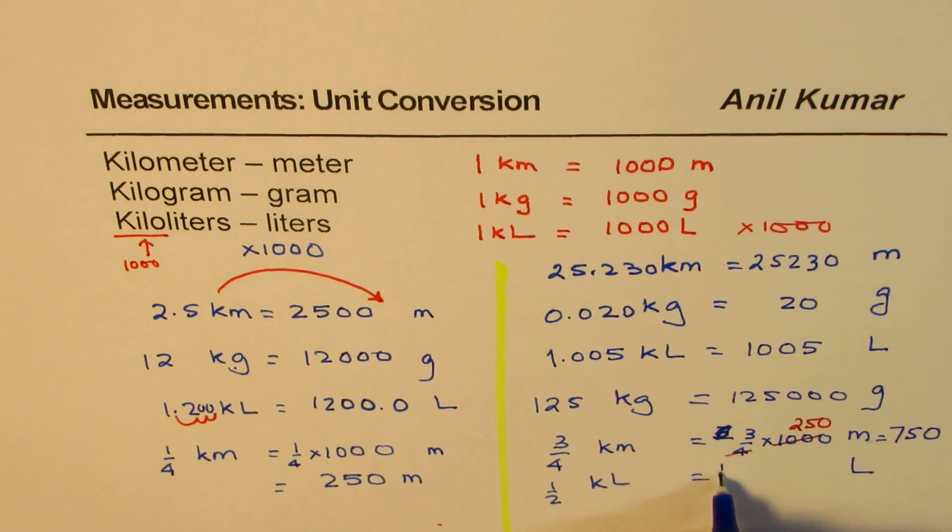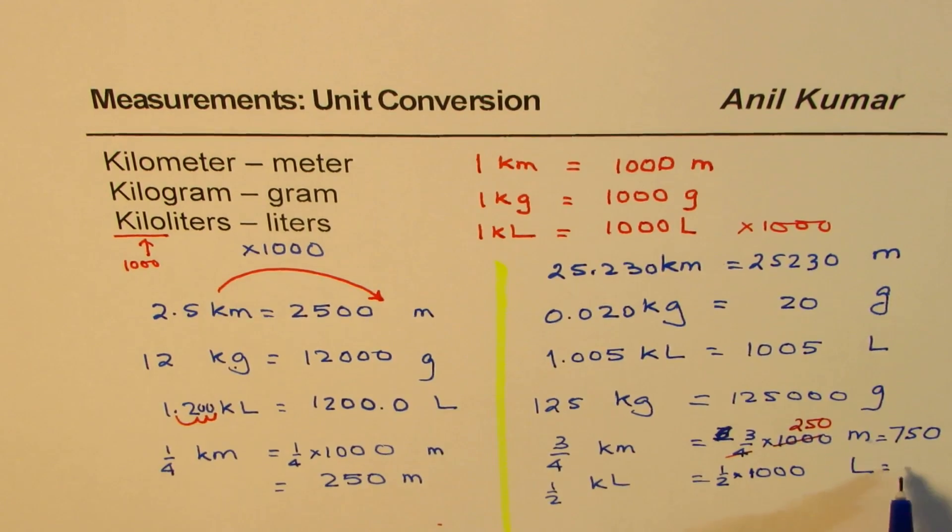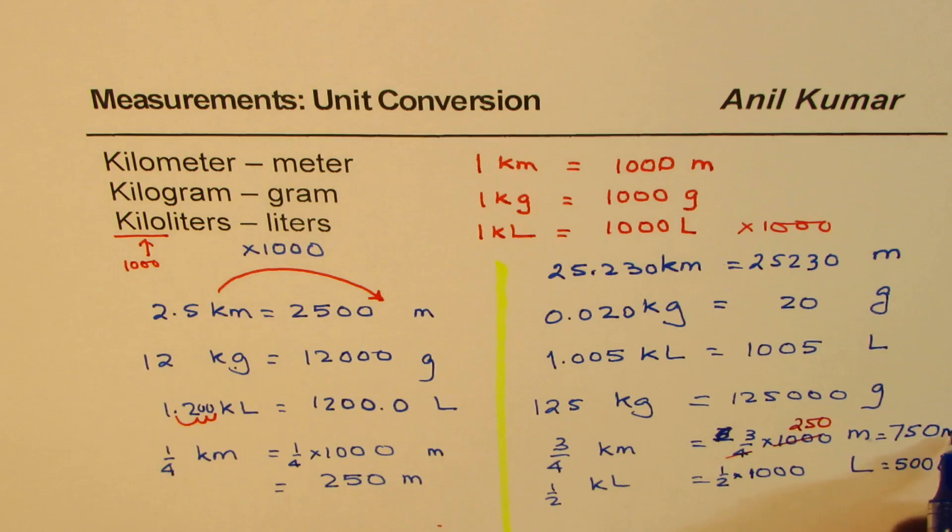Half of 1,000, you could do 1,000, right? Half of 1,000 is 500. So you get 500 liters. That one is meters.